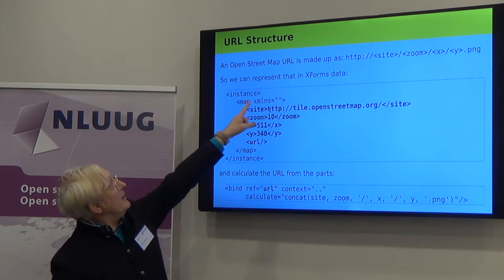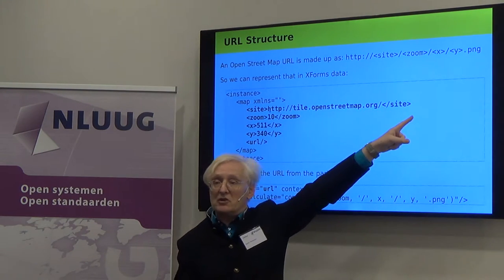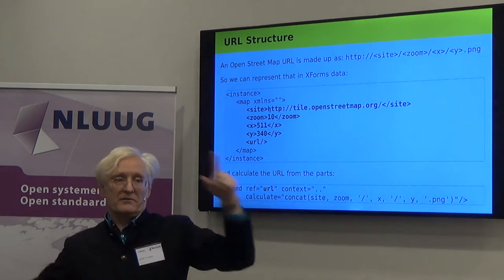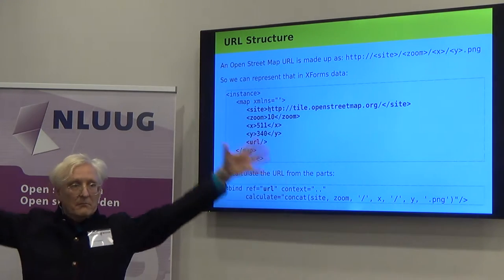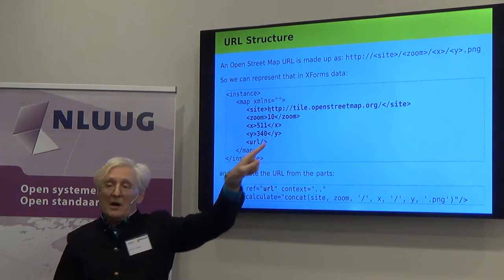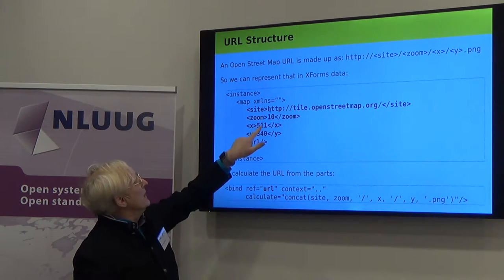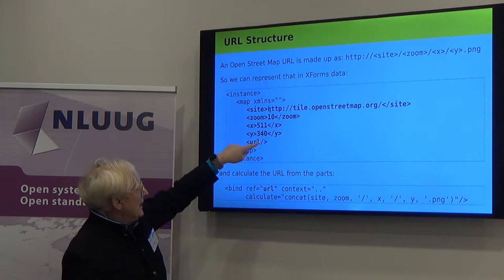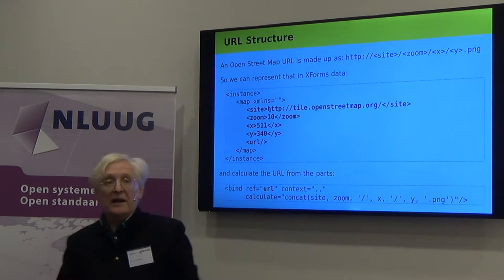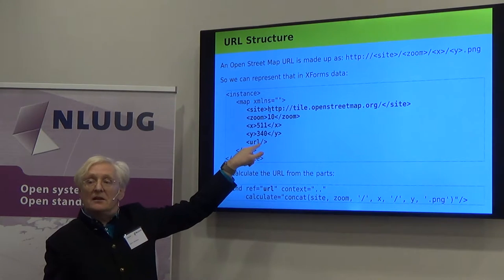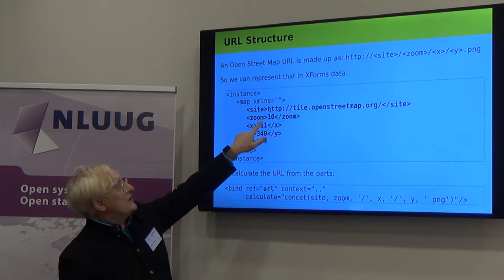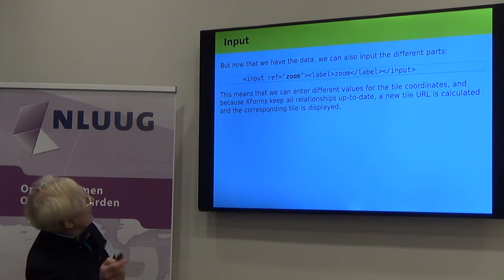Now, an OpenStreetMap URL has a structure to it: it's got the site where it's coming from, the level of zoom, and an X and Y coordinate for the world map. So we can split that up into separate parts of the data — the site, the zoom level, the X and the Y. We don't specify the URL anymore; we calculate it by saying it's the concatenation of the site, zoom, and so on. So once I've entered this in, the URL gets calculated for me automatically. The nice thing is that now we've got live data, we can start interacting with it.